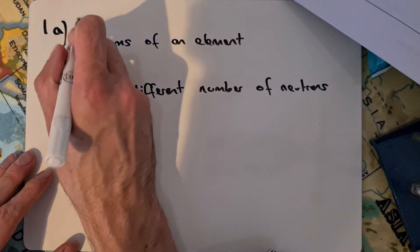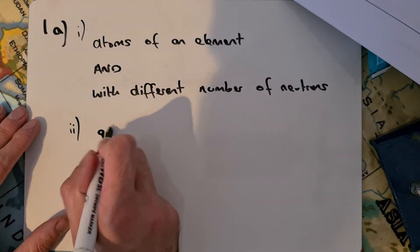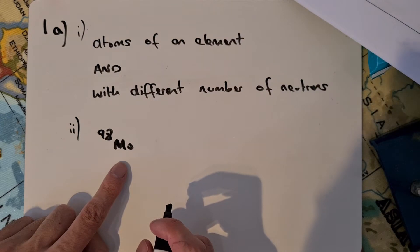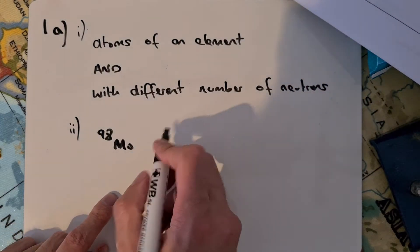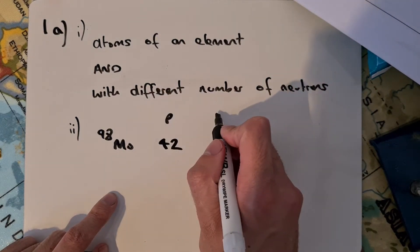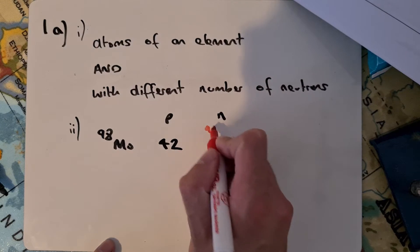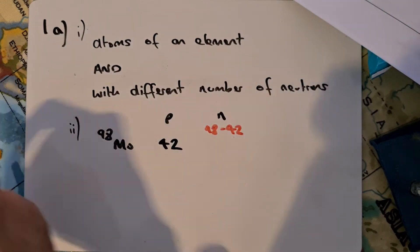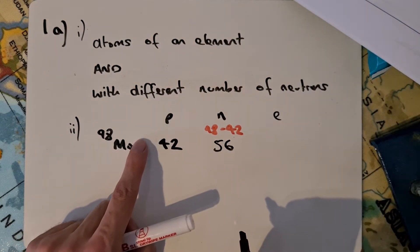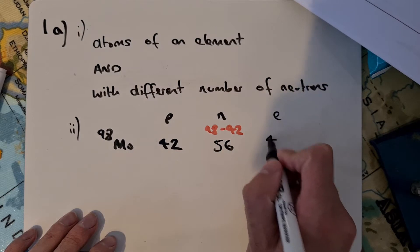In part 2, we had to complete that table where we had 98 molybdenum. This tells us its mass number. Molybdenum's atomic number is 42, so it would have 42 protons. To work out the neutrons, we do 98 minus 42, which gives 56 neutrons. Because there's no charge, the number of electrons must equal the number of protons, so 42.